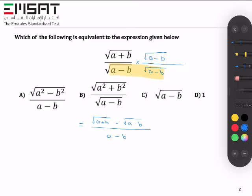Now look at the numerator. Square root of a plus b times the square root of a minus b is the difference between two squares, which could also be written as the square root of a squared minus b squared over the same denominator, which is a minus b.